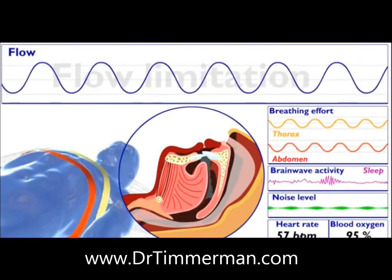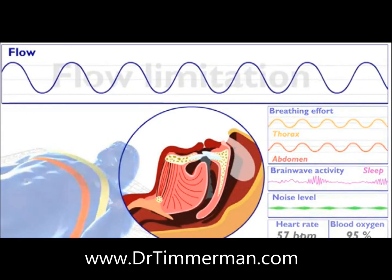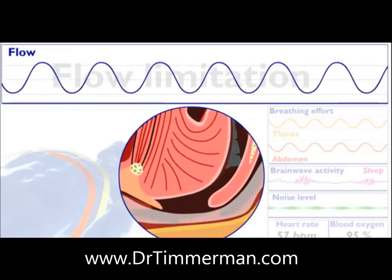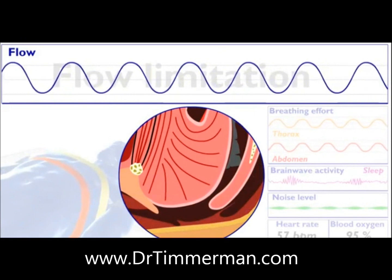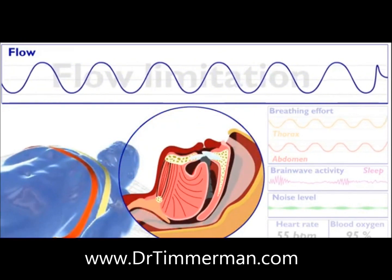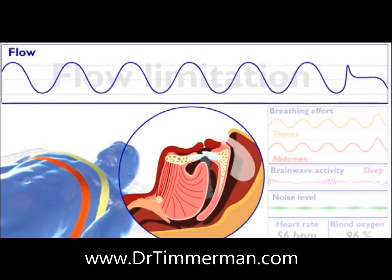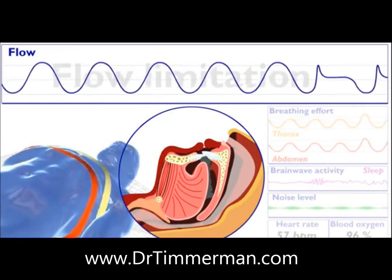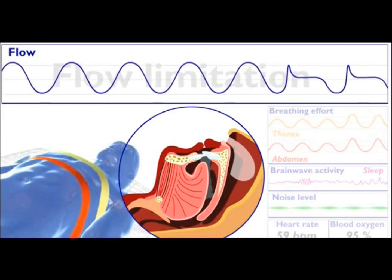Flow limitation — what is really happening? For those who have sleep-disordered breathing, the muscles in the upper airway begin to relax during sleep, and the tongue and soft palate move closer to the back of the airway. This usually occurs if you are lying on your back or side due to the force of gravity. As the airway gradually narrows, it limits the rate at which air can pass through. We call this flow limitation.